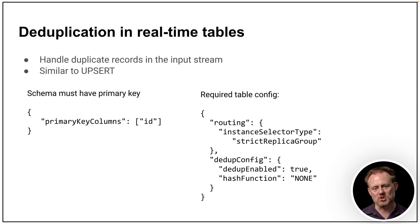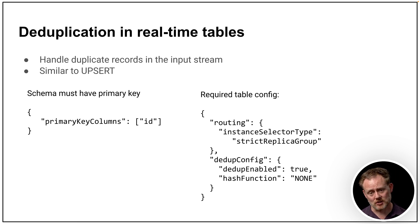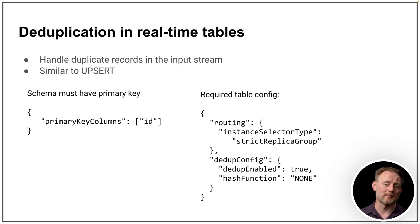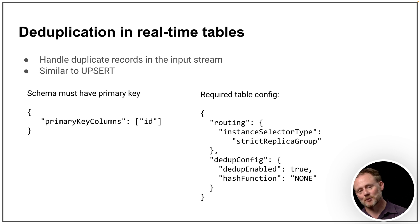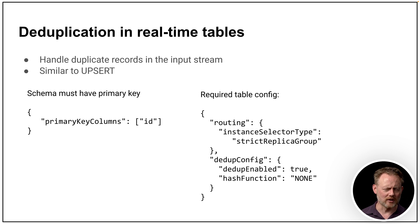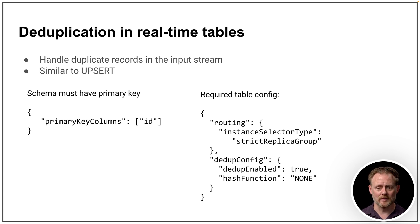Another real-time table ingest feature: deduplication. Duplicate records may exist in the input stream topic that you're ingesting into your real-time table, and you may not want to see them. Now you can, as a matter of table configuration, specify that you would like duplicates removed. That relies on the schema having a primary key so Pinot knows what a duplicate is. If this sounds like a particular kind of upsert configuration, you're right — they're semantically equivalent.